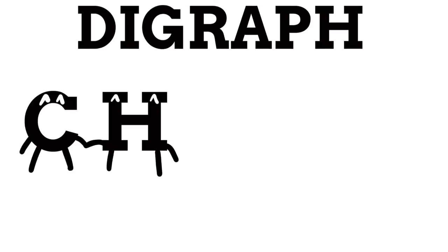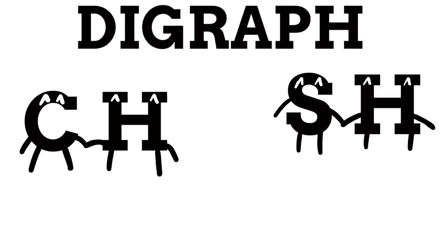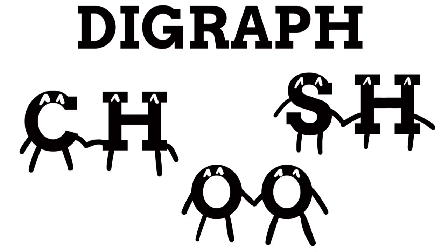A digraph is when we use two characters of an alphabet to make one singular sound. There are many examples of this in English. Think of C and H coming together to make the ch sound, or S and H to make the sh sound. We can even use two of the exact same letter to make an entirely different sound, like how two O's make the ooo sound. Digraphs are great because instead of making up new characters to fill up our alphabet, we can just put two we already have together, and when they are done working together, they can still be used separately to make their own sounds.